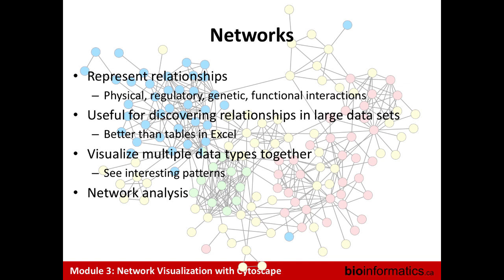Functional interactions are a little bit more generic. All the three types I mentioned could be called functional interactions. We're going to learn about this more tomorrow. But the idea of a functional interaction is that genes are related somehow functionally — they have similar sequence, similar domains, or they're part of the same pathway. All of those are examples of some kind of functional relationship, and that's useful for gene function prediction, which we'll talk about tomorrow.